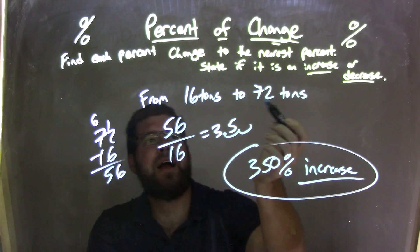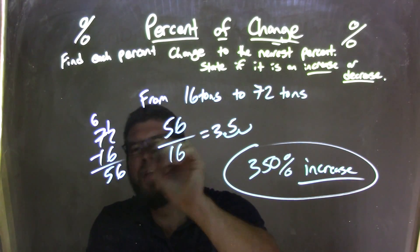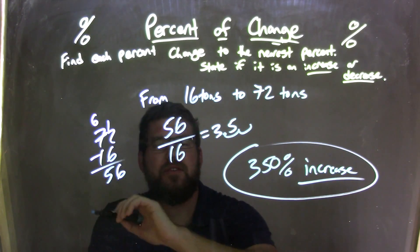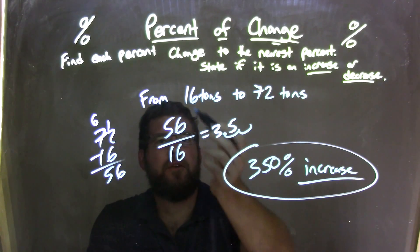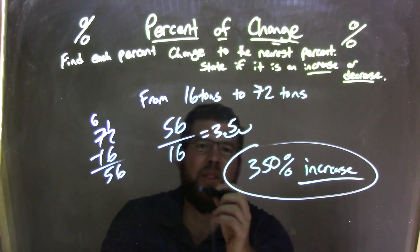We then have to subtract 72 minus 16, find the difference. It comes out to be 56. We take that 56, divide it by the first number, which is 16, and we get 3.5.